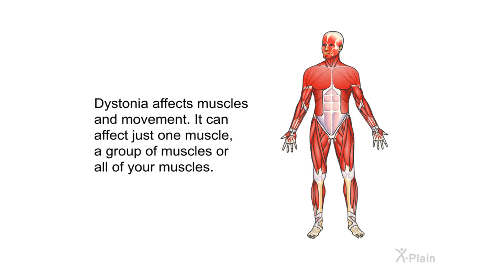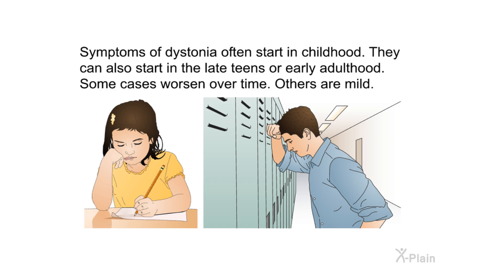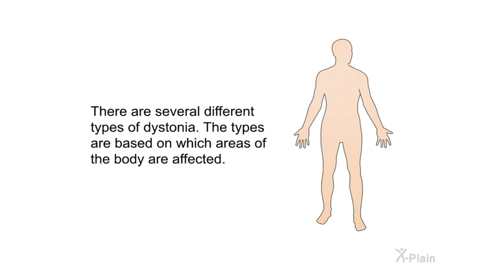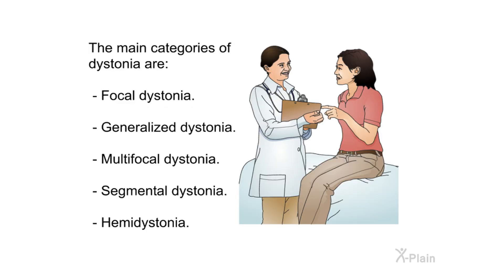Dystonia affects muscles and movement. It can affect just one muscle, a group of muscles, or all of your muscles. Symptoms often start in childhood, but can also start in the late teens or early adulthood. Some cases worsen over time, while others are mild. There are several different types of dystonia, categorized by which areas of the body are affected.